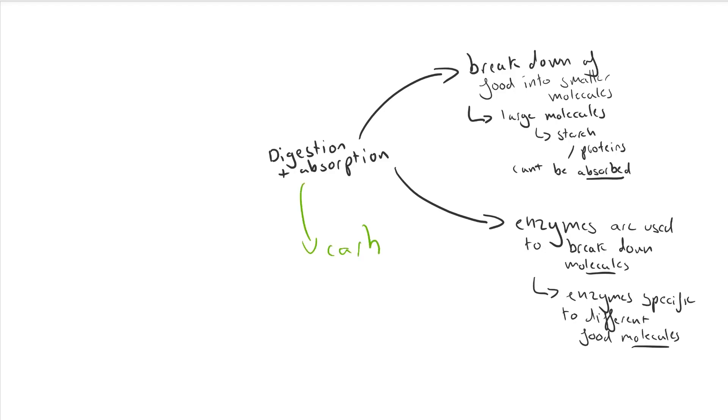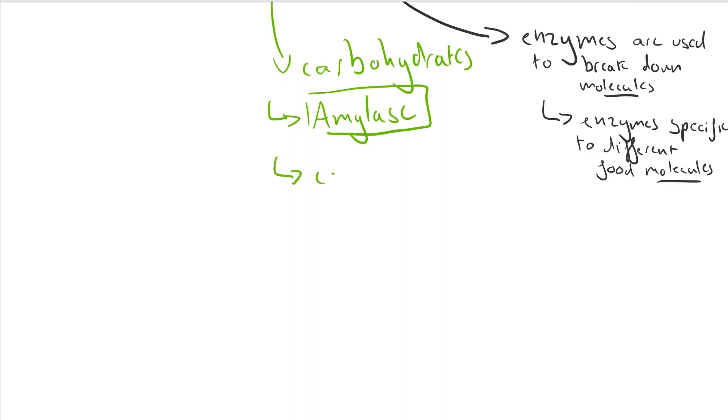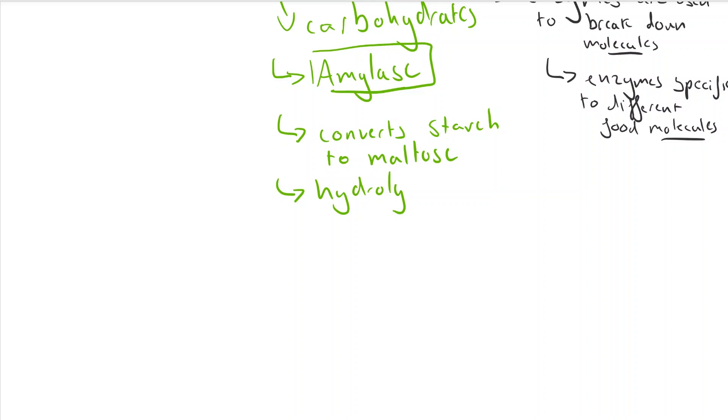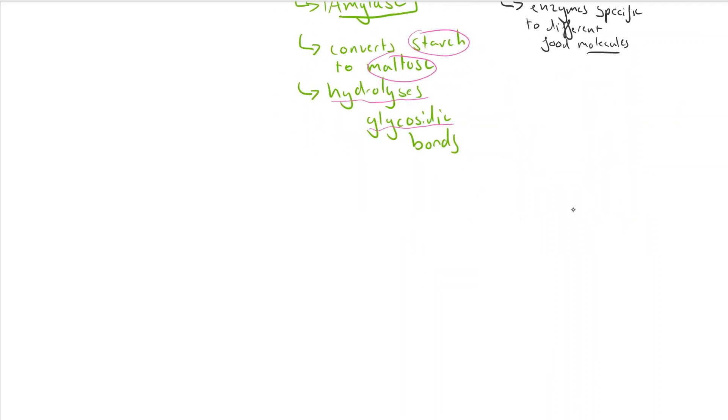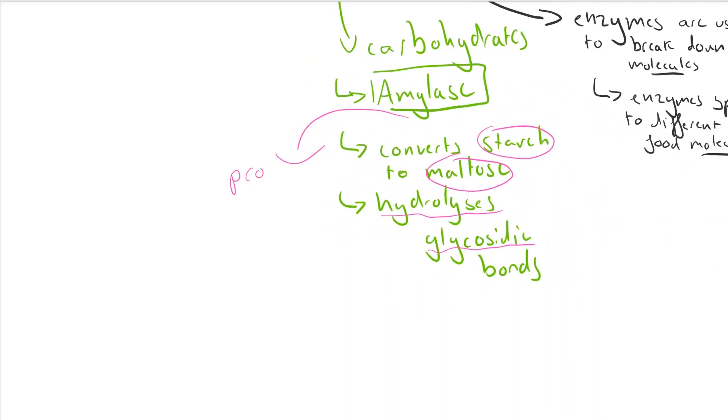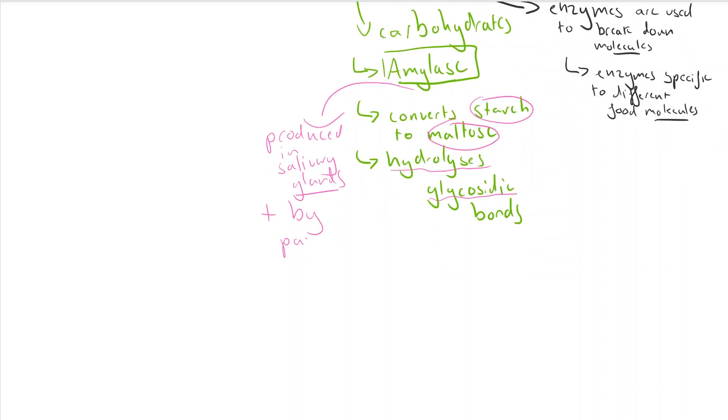First, we're going to look at carbohydrates, like starch. The enzyme you need to know which breaks down starch is amylase, which is a digestive enzyme that catalyzes the conversion of starch into a smaller sugar called maltose. Starch is a polysaccharide with many bonds, and maltose is a disaccharide—two molecules joined together. This breakdown involves the hydrolysis of glycosidic bonds, the bonds holding the glucose monomers in a starch polymer together. Amylase is produced in the salivary glands and also in the pancreas.